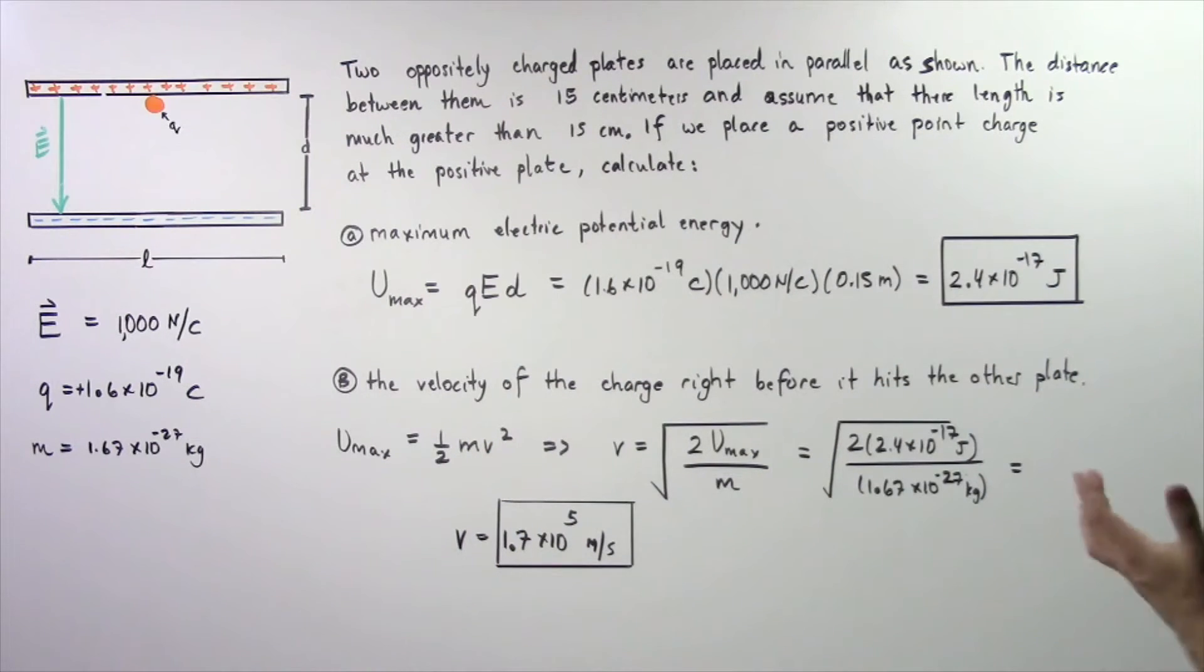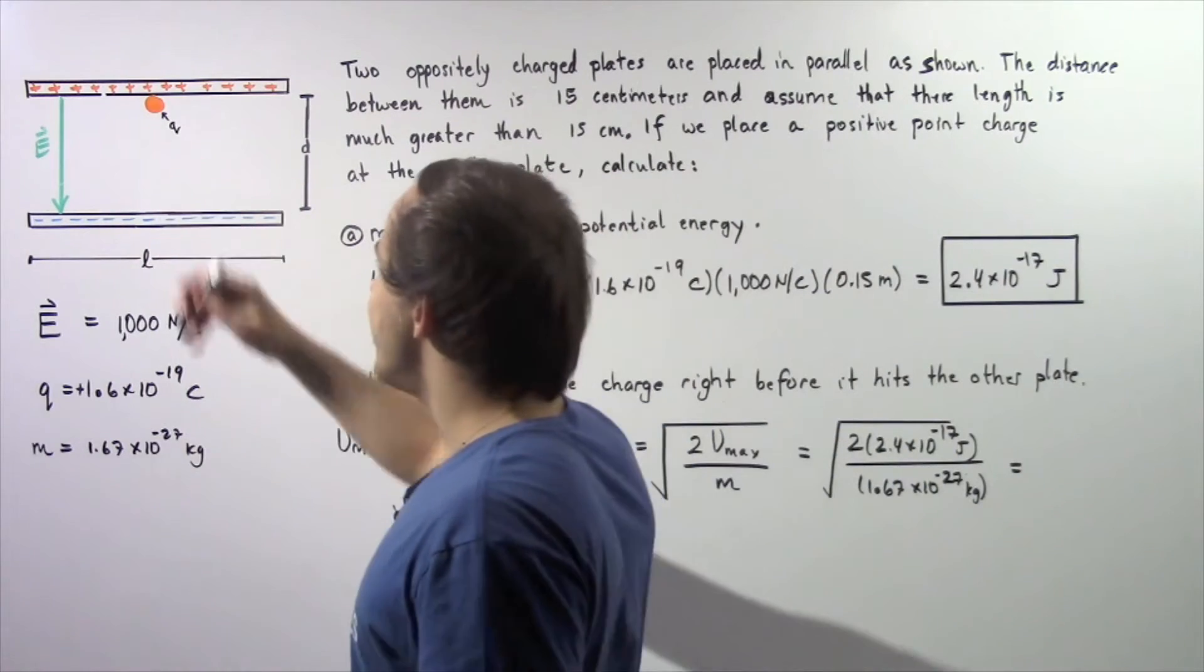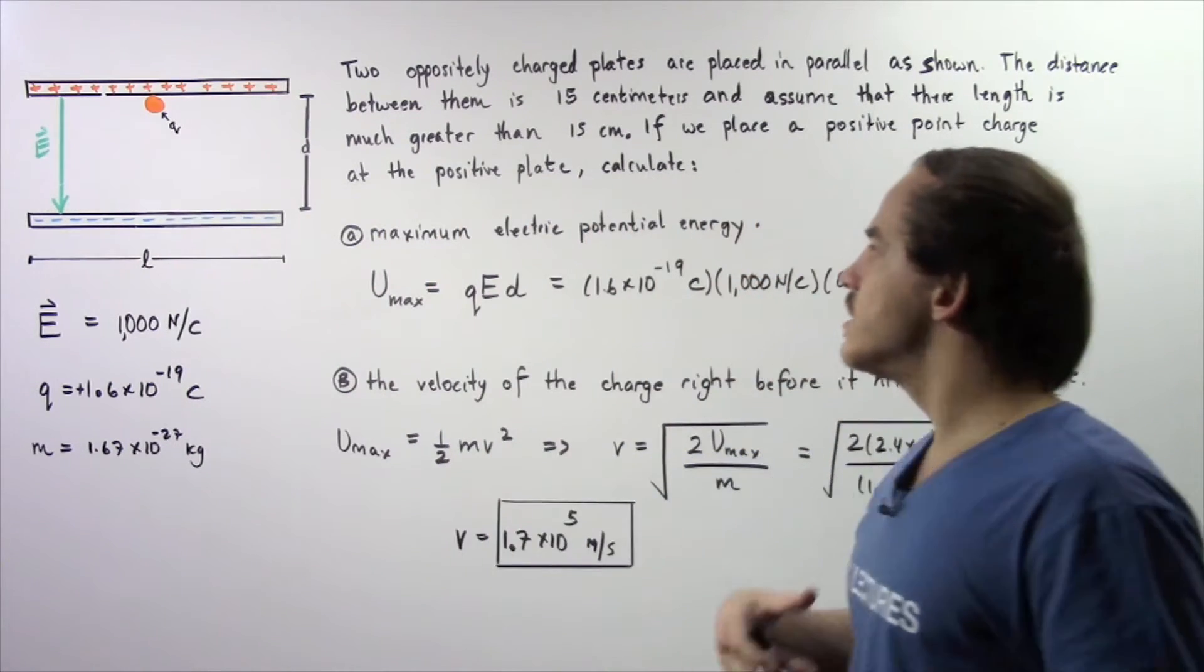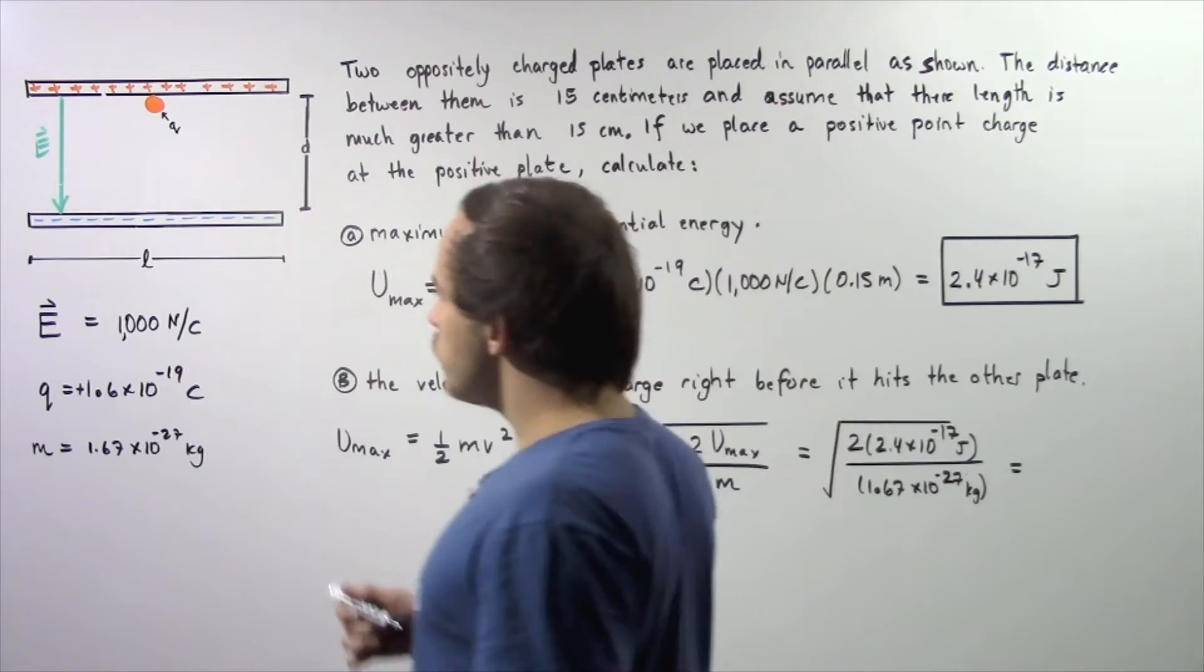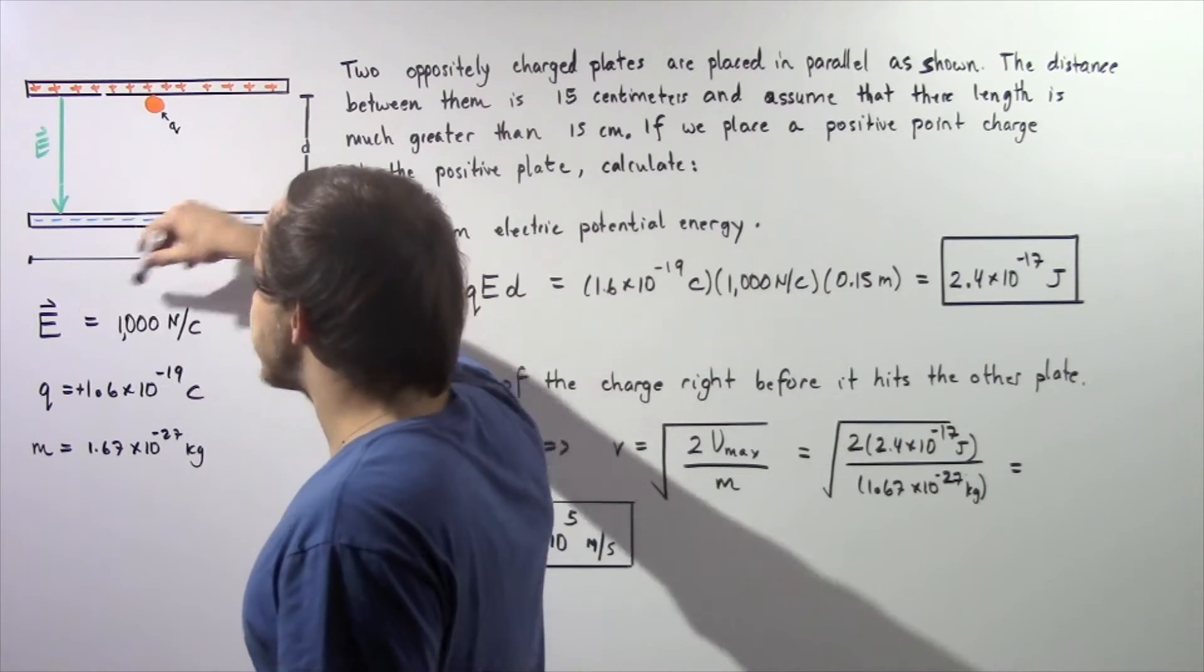If we place a positive point charge at the positive plate as shown, calculate in part A the maximum electric potential energy, and in part B the velocity of the charge right before it hits the other plate. We assume that this is our electric field.